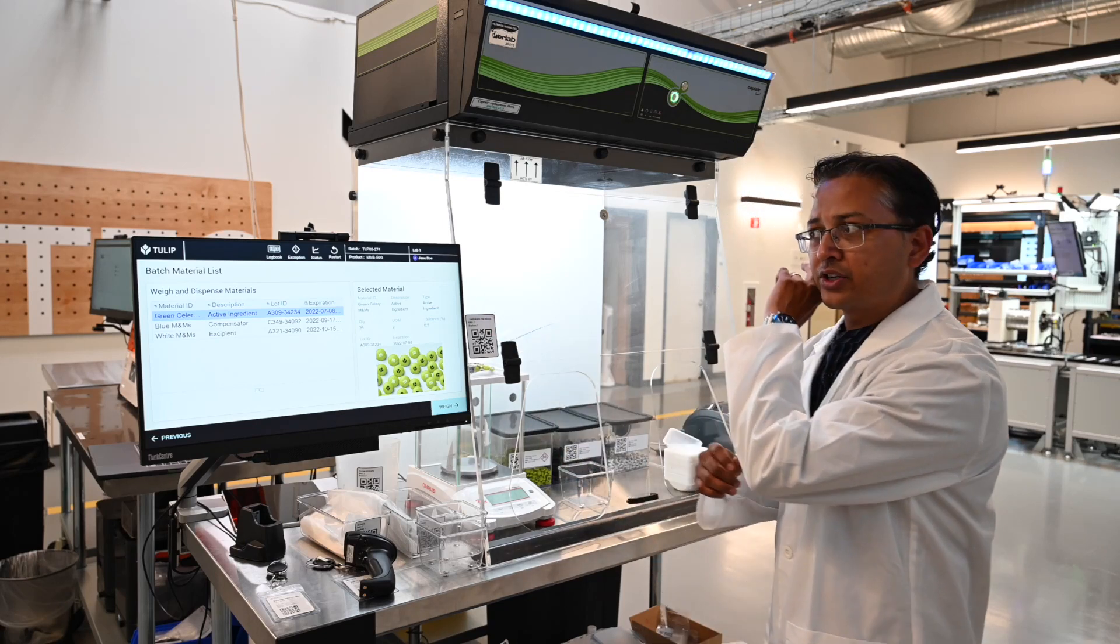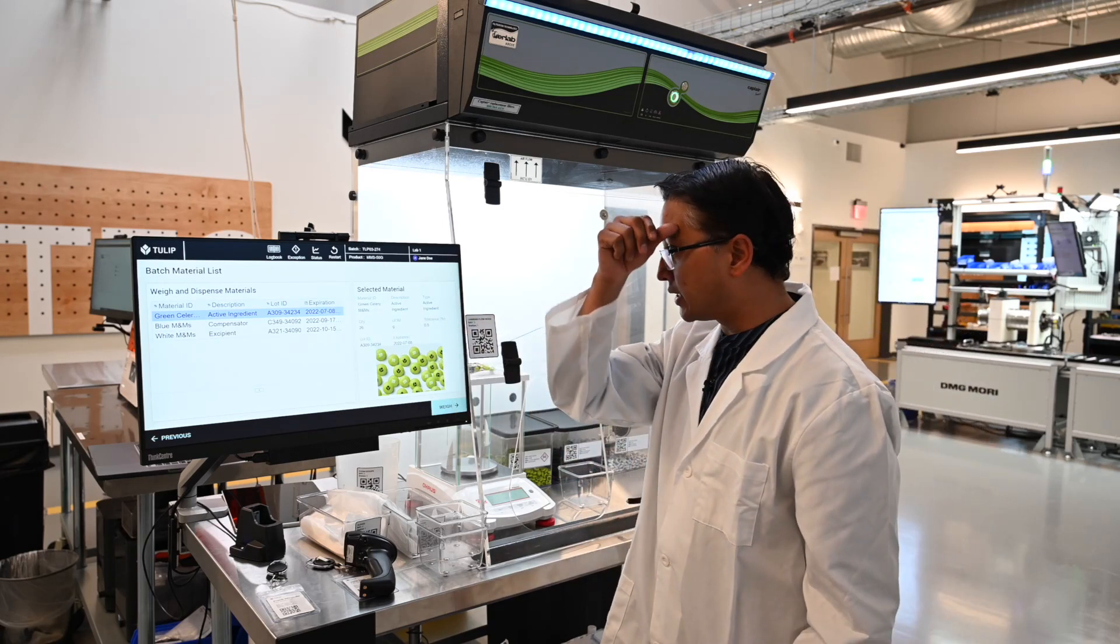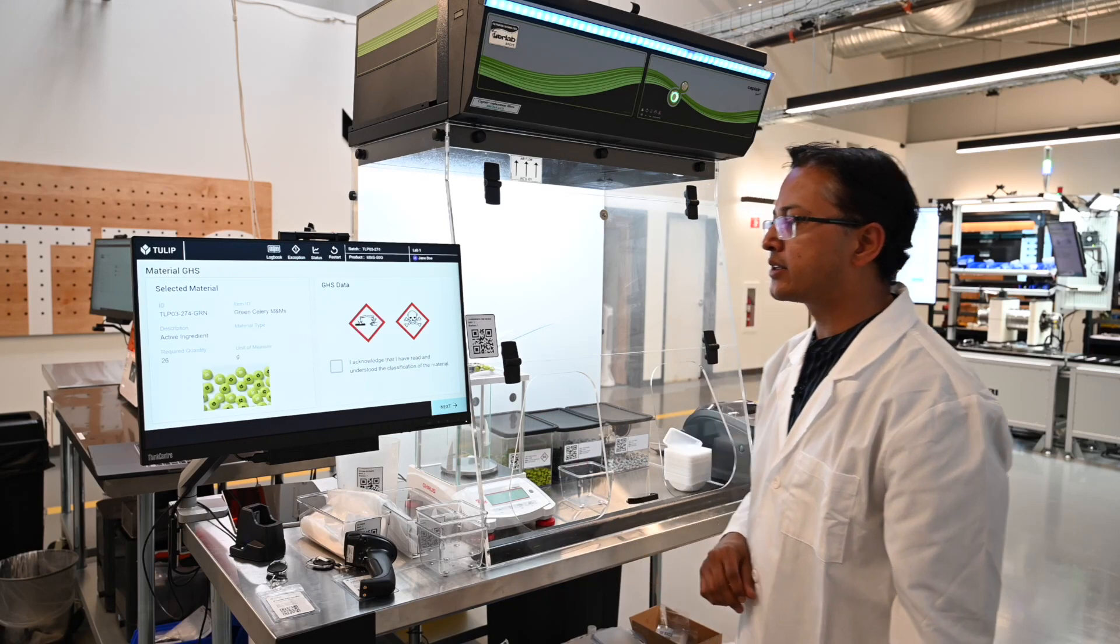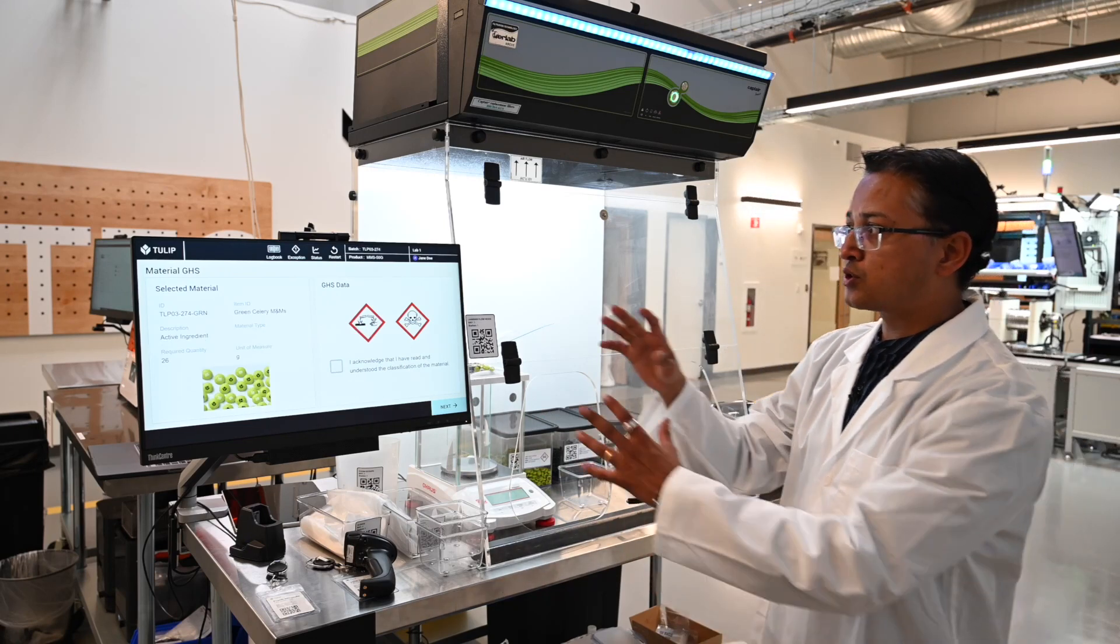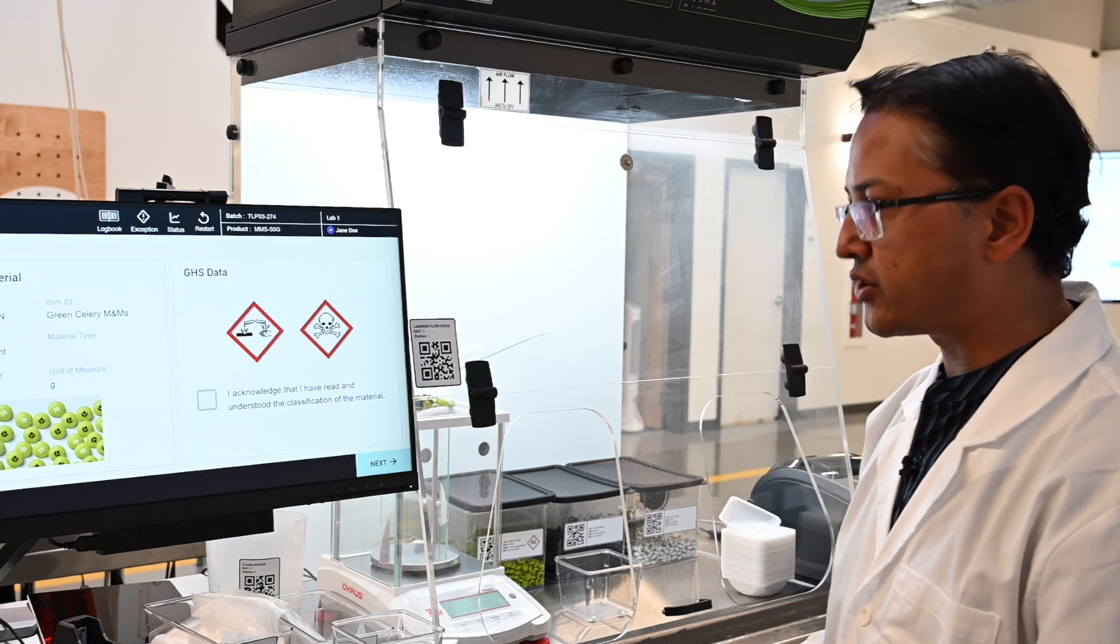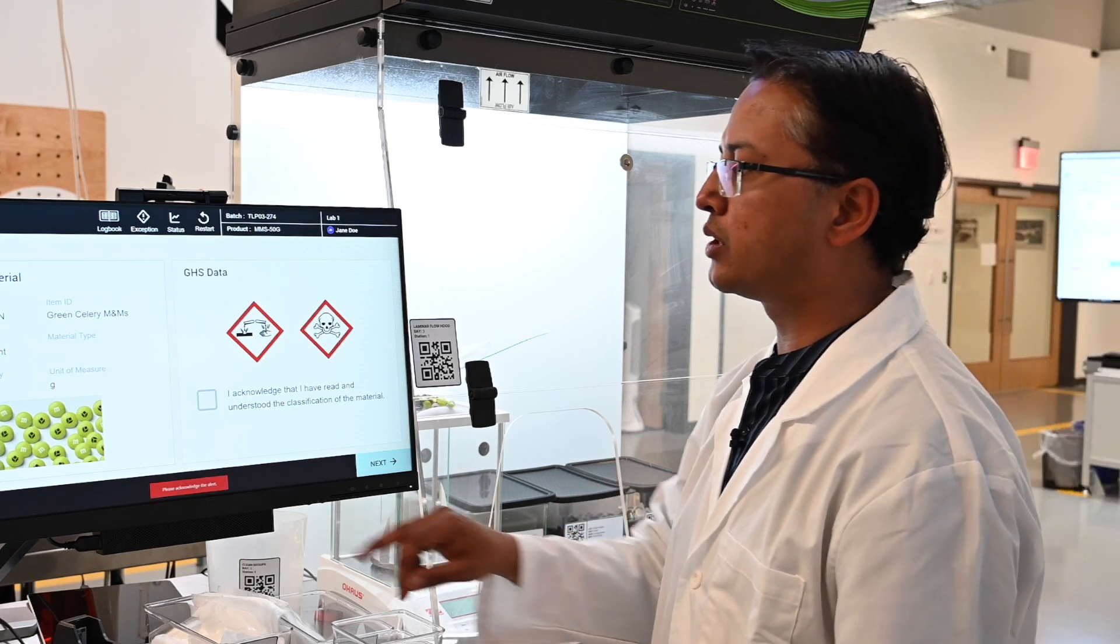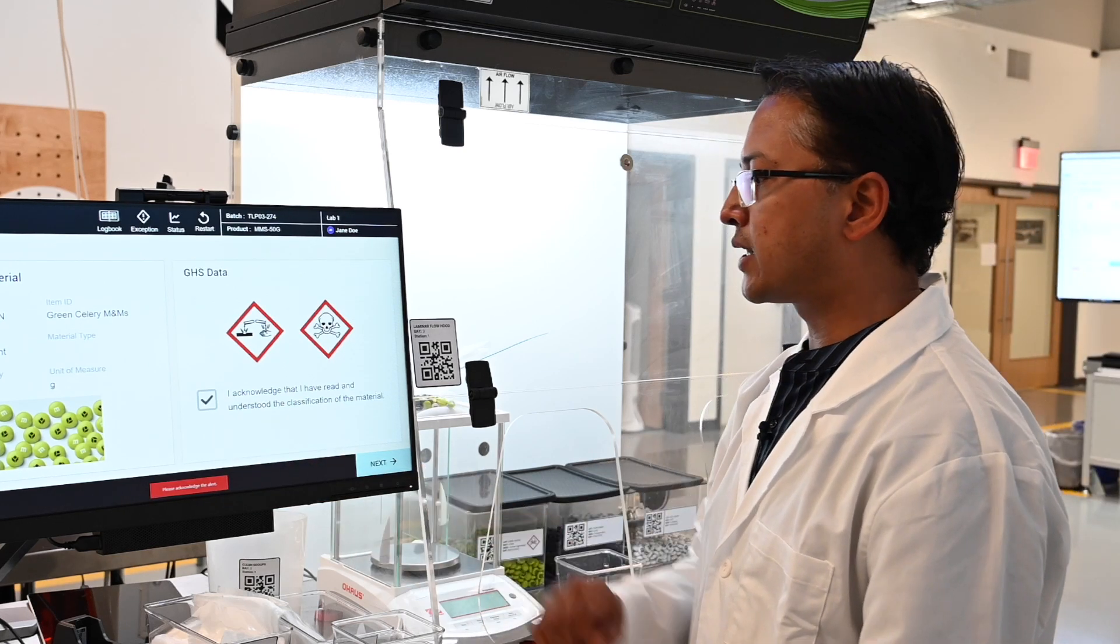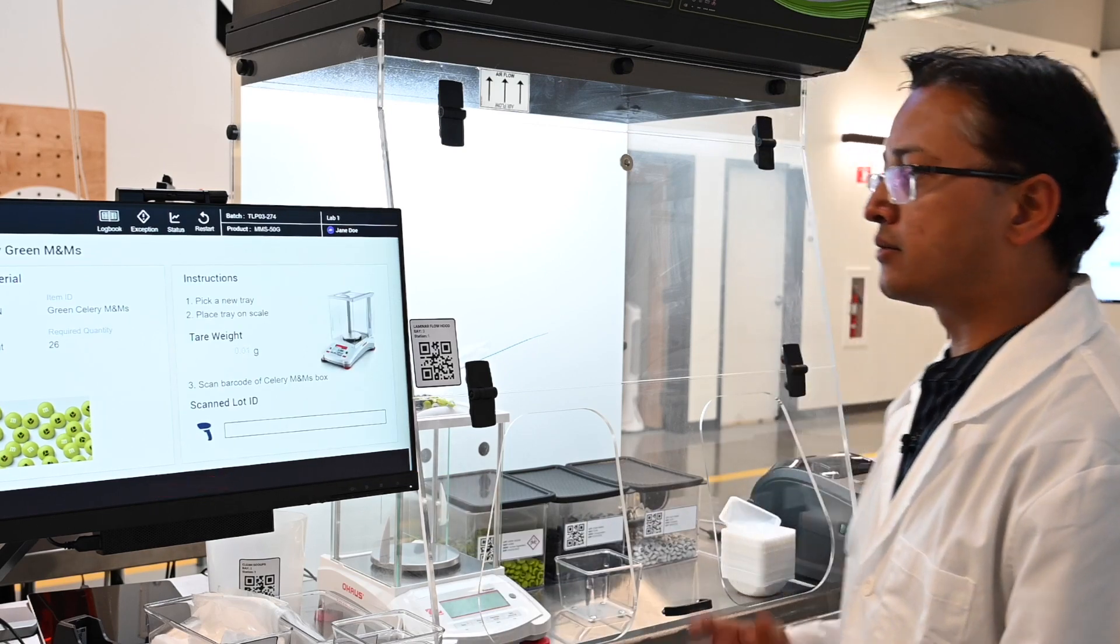Once I've completed this, the application shows me bill of materials of all the material that I need. So I'm going to confirm that I need this one. The application also gives me an alert that I'm using an active ingredient. So if I try to skip through this step, the application will not let me do that. But once I confirm this, the application will let me move on to the next step.